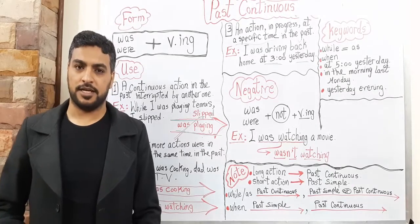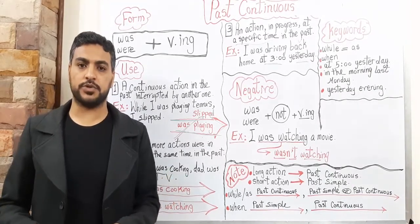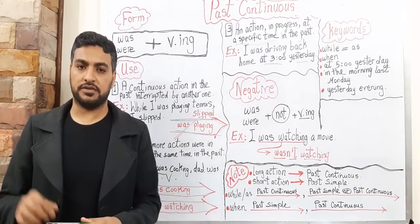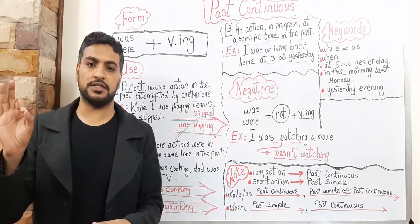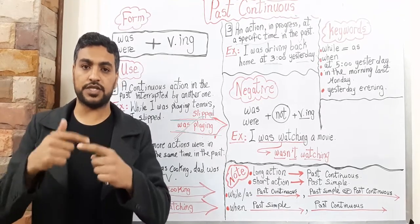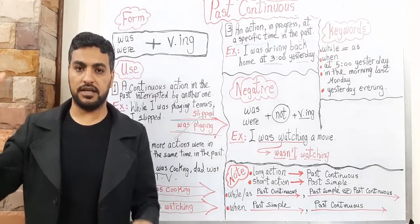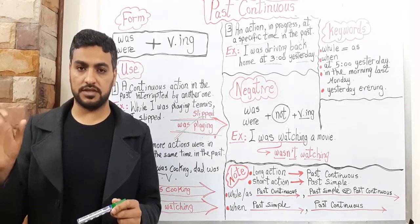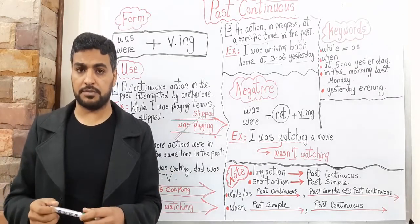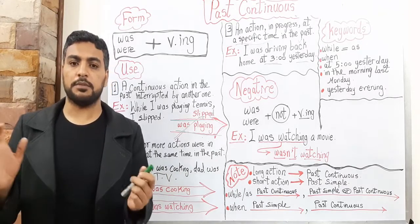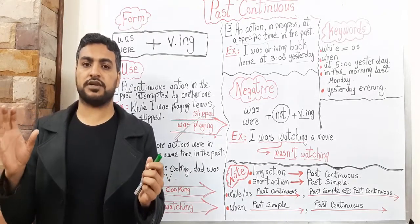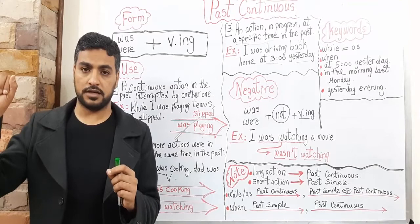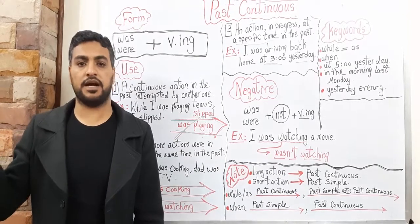Hello everybody, this is Mahmoud al-Sayed. Today I'm going to talk about a new lesson, which is Past Continuous. What's Past Continuous? From its name, Past Continuous is something in a continuous form, but in the past. Let's compare it with the Present Continuous. Past Continuous is about something which was continuous in the past, but the Present Continuous is something in the present. The form is: was/were plus verb-ING.